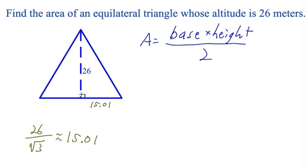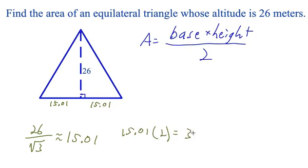Now the altitude of an equilateral triangle not only bisects the opposite angle, but it also bisects the base. So the other part of this base is also 15.01. To find the length of the entire base of the equilateral triangle, we just need to multiply 15.01 times 2.